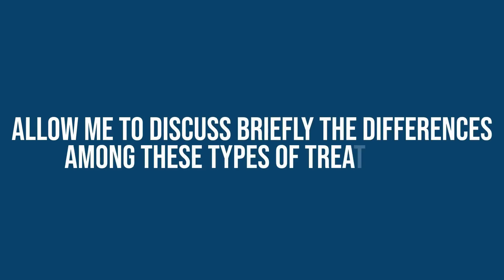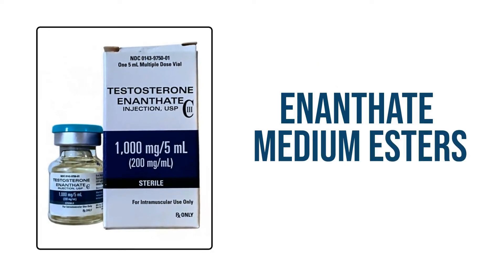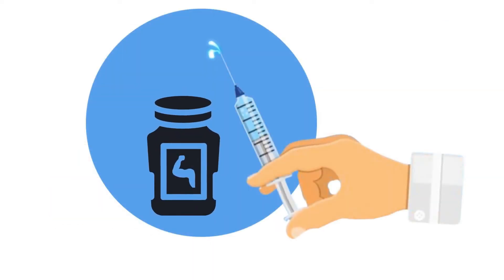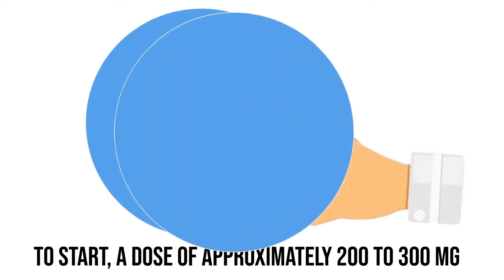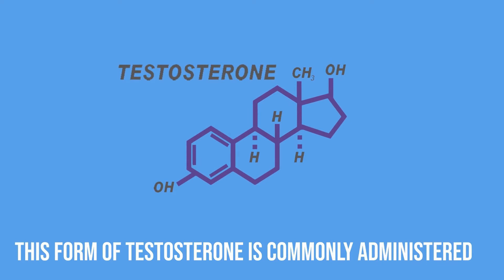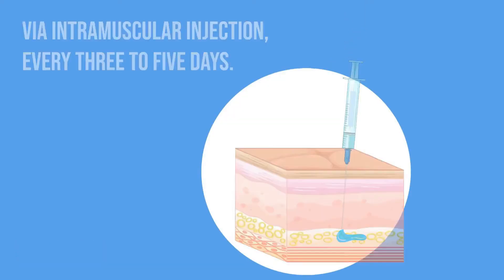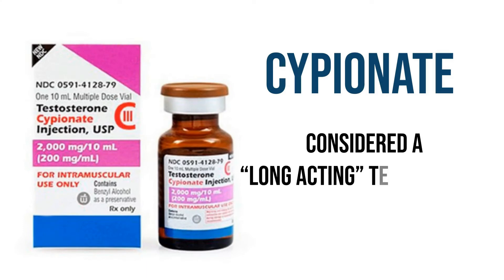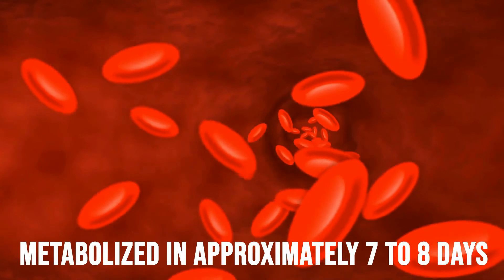Allow me to briefly discuss the differences among these types. Enanthate is a medium ester, meaning it has a medium rate of release. To start, a dose of approximately 200 to 300 milligrams of this form of testosterone is commonly administered via intramuscular injection every three to five days.